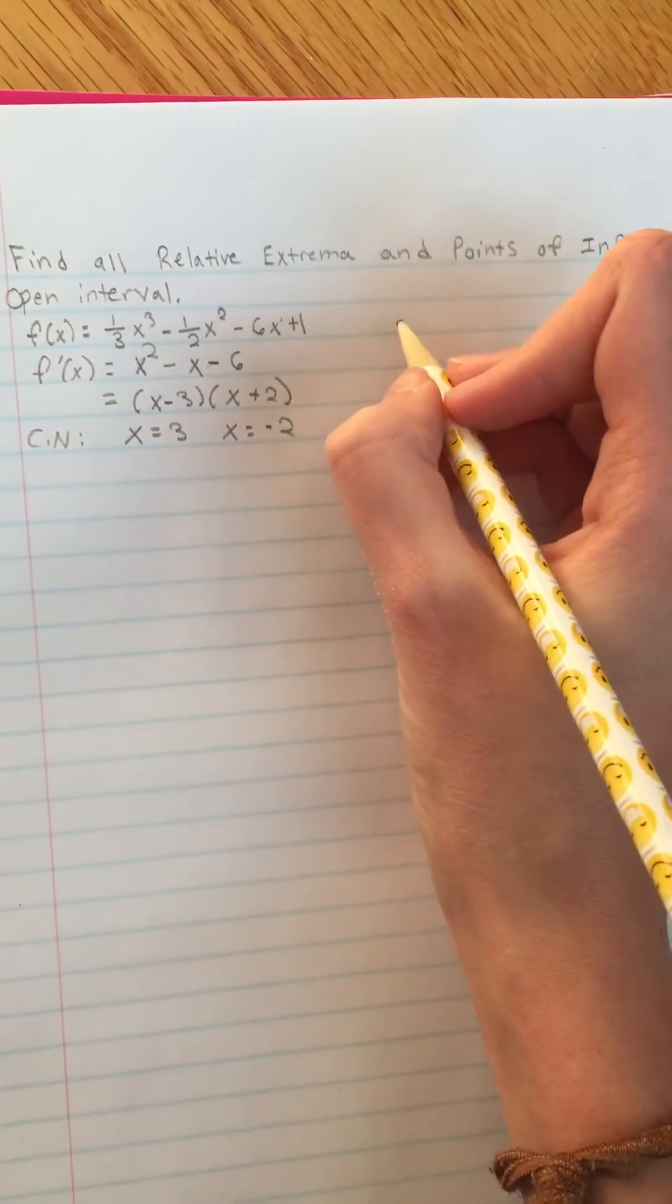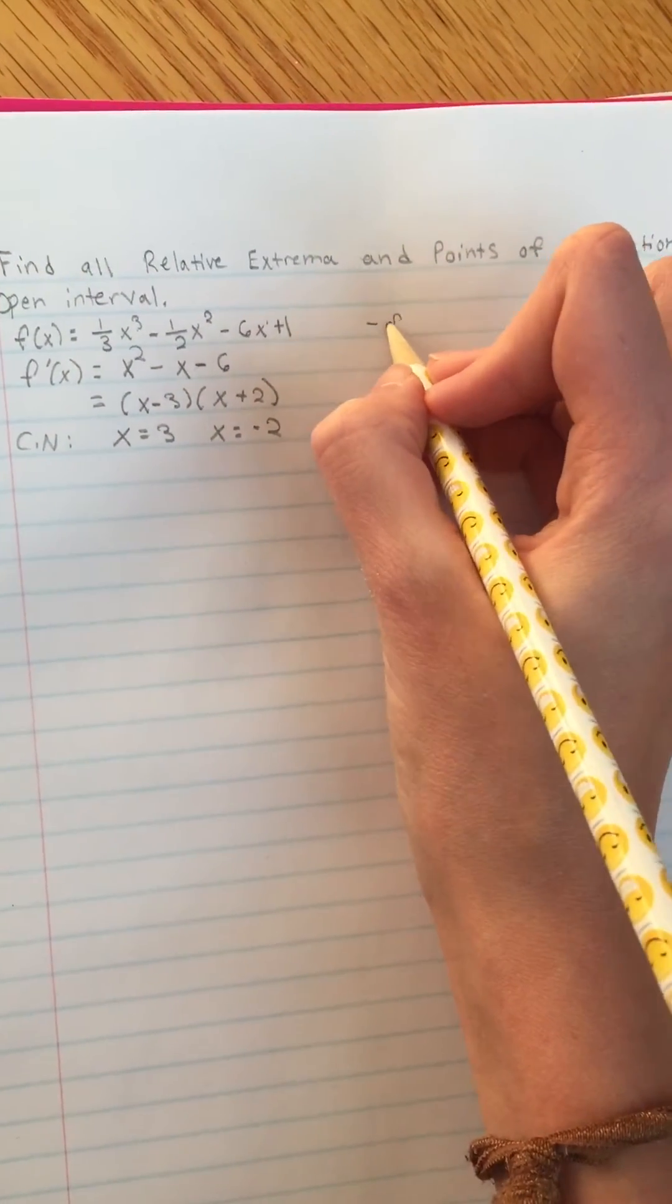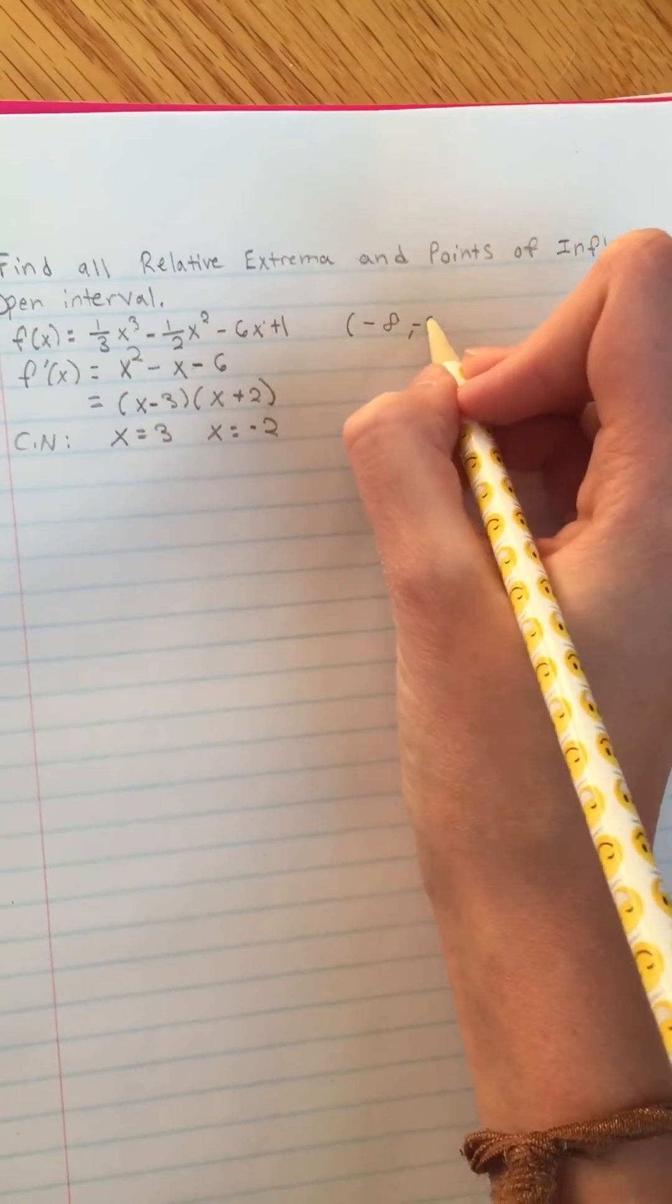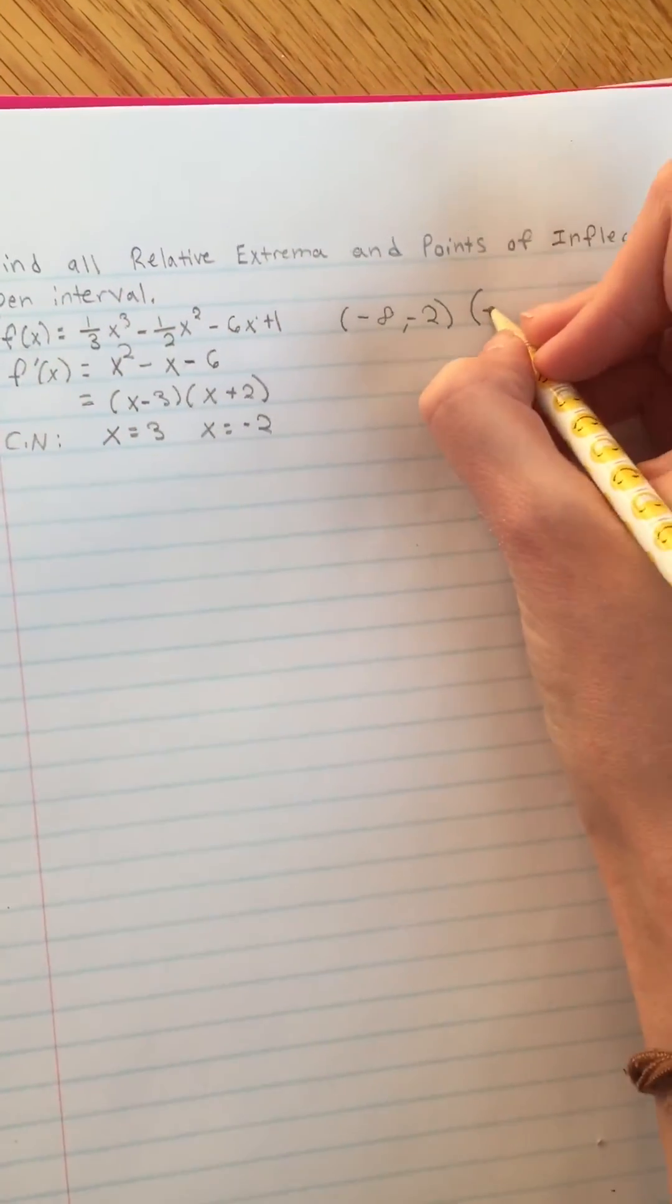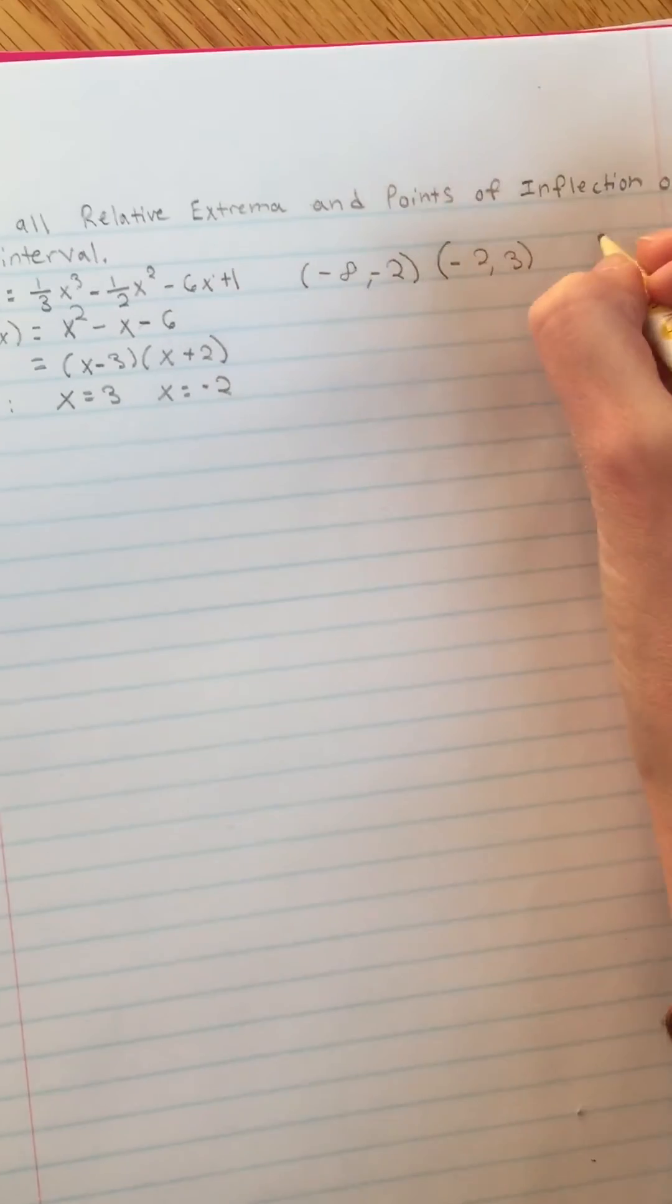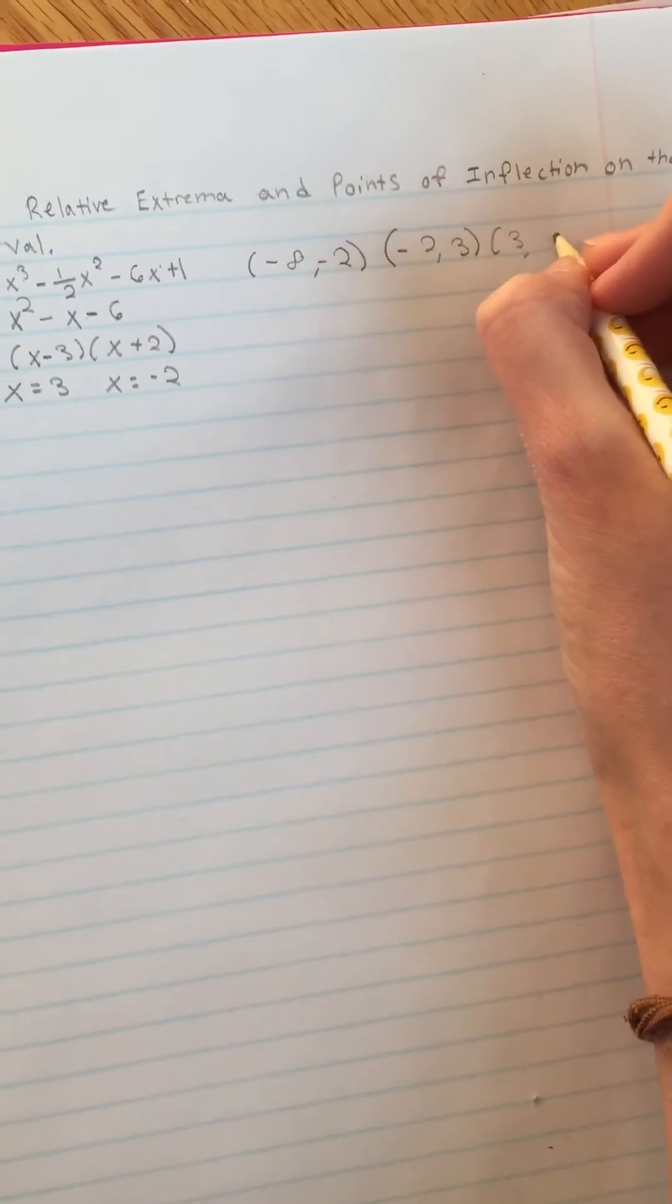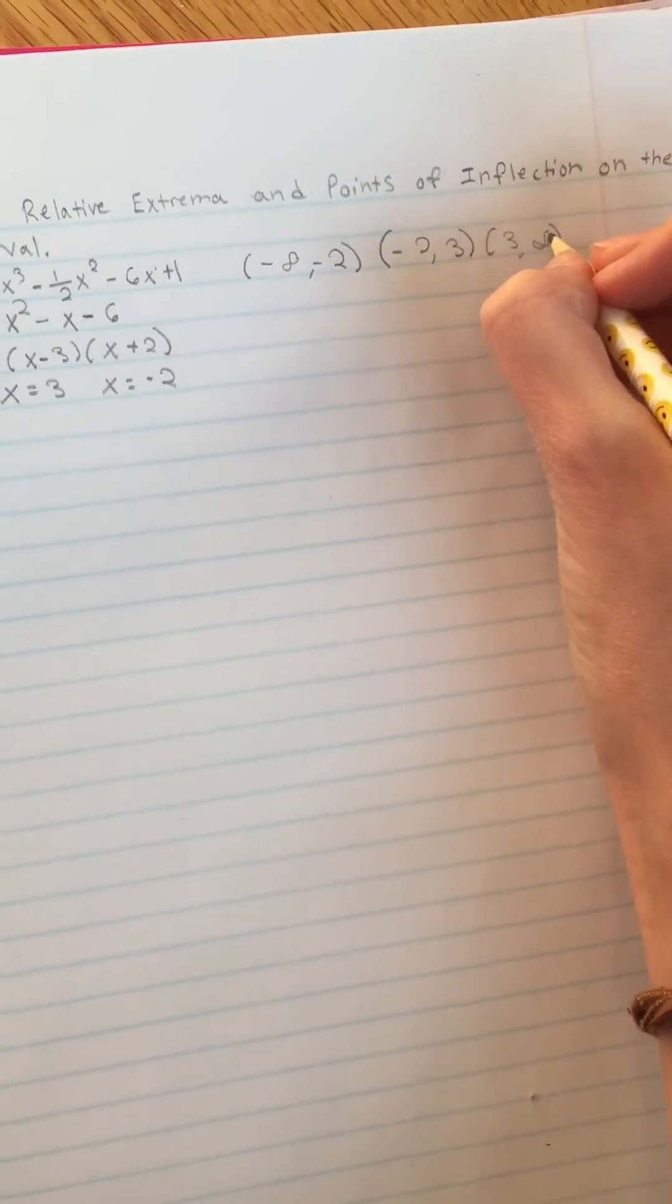So with those, now we have to make a chart and do negative infinity to negative 2, negative 2 to 3, and then 3 to infinity. Yikes.